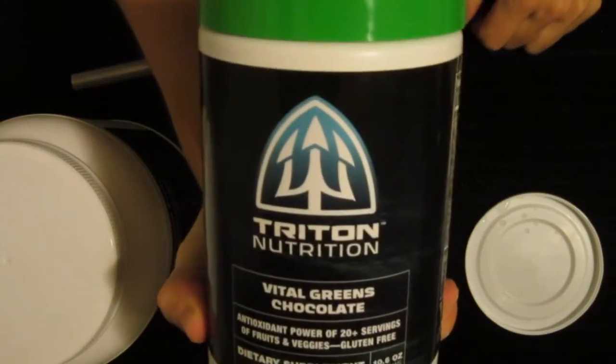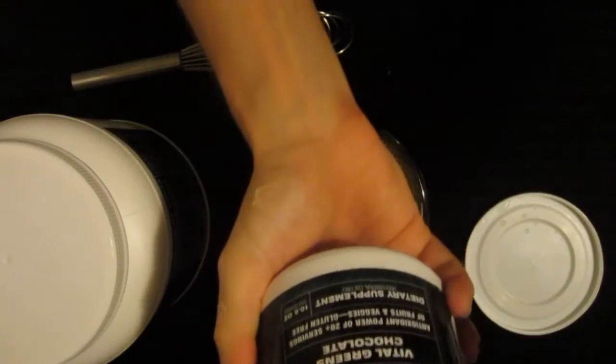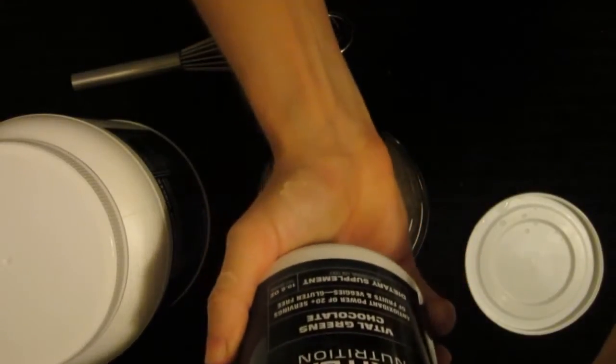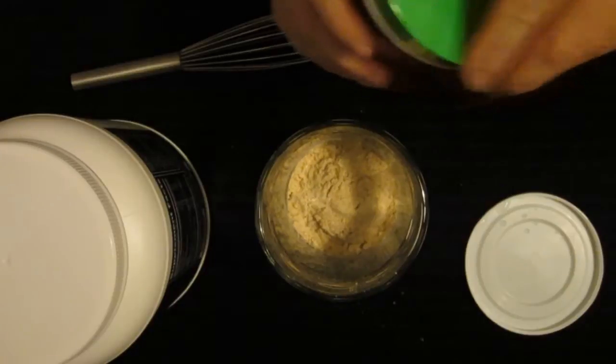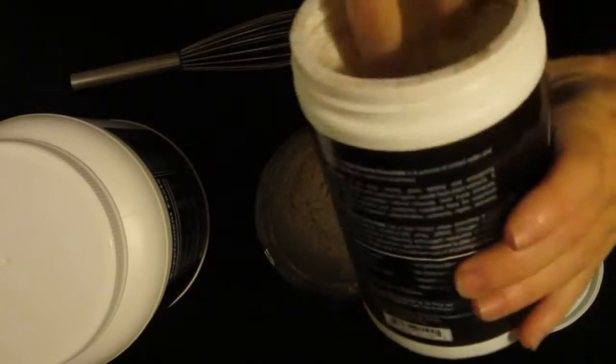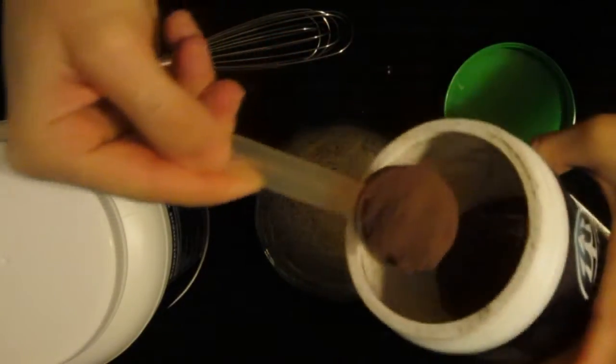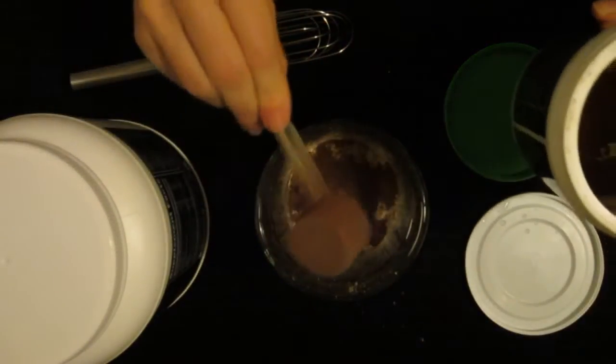Vital Greens chocolate. Basically, the antioxidant power of 20 plus servings of fruits and vegetables. It's also gluten-free and it has a delicious chocolate flavor. As you can see, I've made a pretty good dent in this and should probably reorder very soon. So I'm gonna put a big heaping scoop into that and my jar or glass or whatever you want to call it.